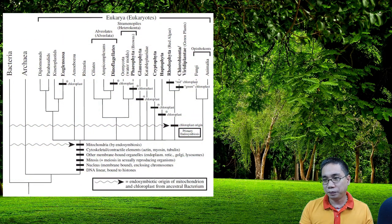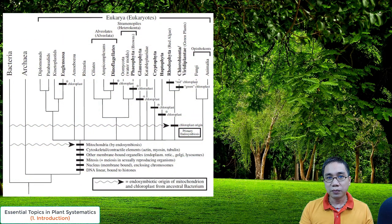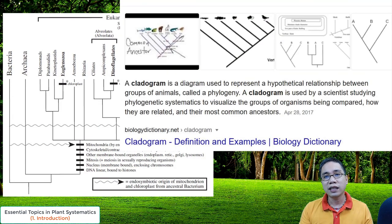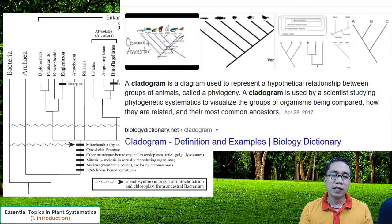Now, let's check this cladogram. So, what is a cladogram? At this point, just think of it as a sort of an evolutionary tree.